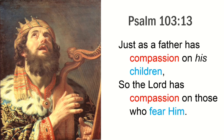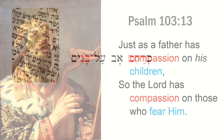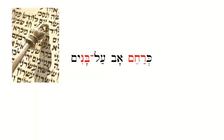I'm going to take you to Hebrew. You may not know the Hebrew, so I'll just work with it a little bit. I like to read the Hebrew first: ke-rachem av al-banim. Now, ke simply means like or as.